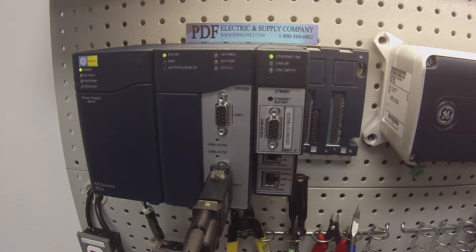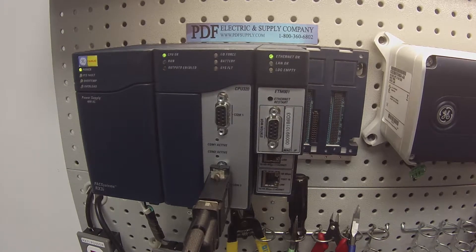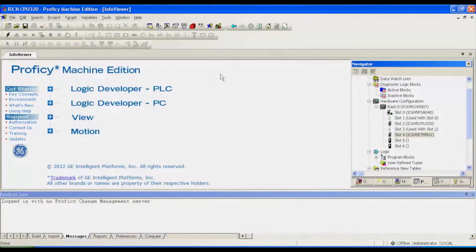In order to do that, what you're going to want to do is go to Proficy Machine Edition. If you guys are watching, I have this open right now. I have an open blank file where I've configured the ETM001.